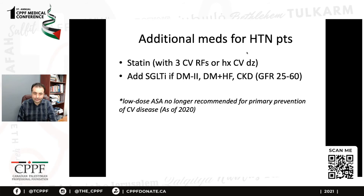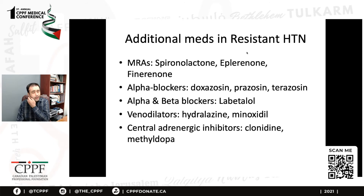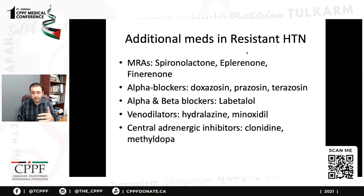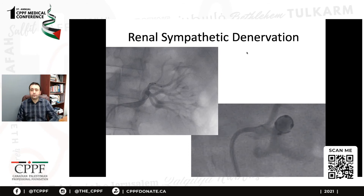Low-dose aspirin is no longer recommended for primary prevention of cardiovascular disease. It used to be recommended for anyone with hypertension, but if they don't have a history of heart disease, it is no longer recommended — the risks of aspirin actually outweigh the benefit. For resistant hypertension, consider mineralocorticoid receptor antagonists: spironolactone, eplerenone, and finerenone. Spironolactone is widely available even if the others are not. Alpha blockers and other second-line agents also remain useful. That's an overview of how to approach resistant hypertension in terms of first-line and second-line medications.